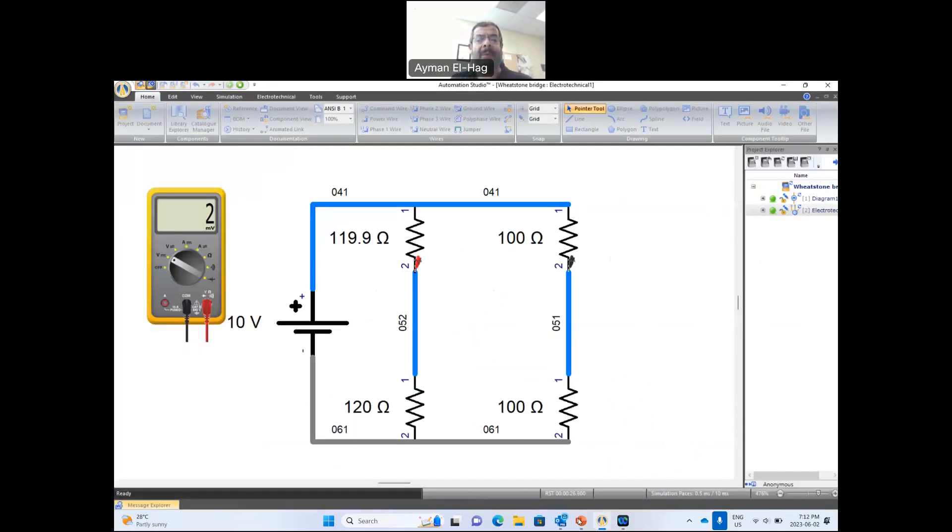Now, why is this circuit important? We use the Wheatstone Bridge, one of the applications of it is we use it with resistive sensors. Let's take an example, the strain gauge. A typical value of the strain gauge is 120 ohm.